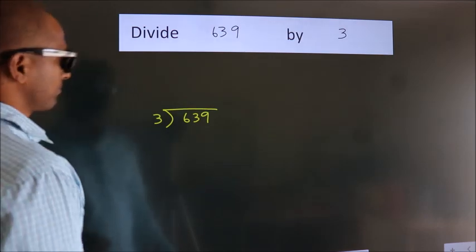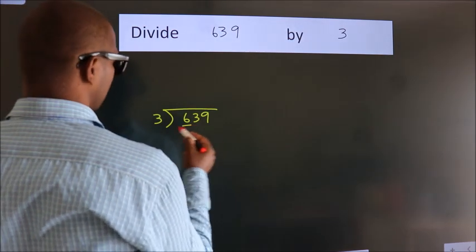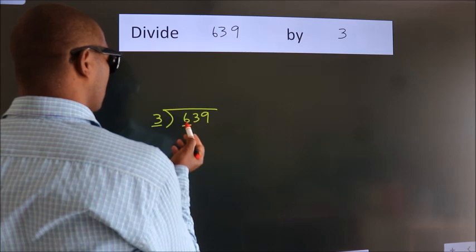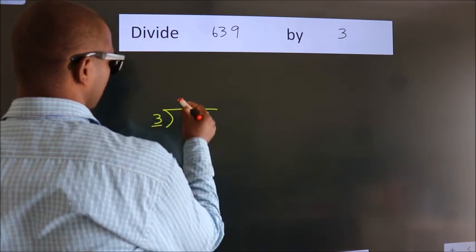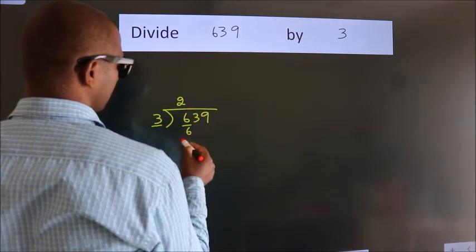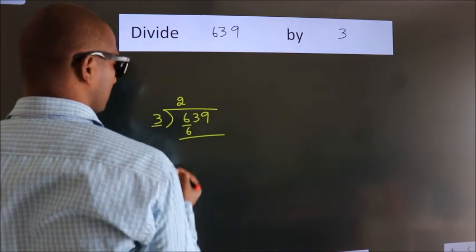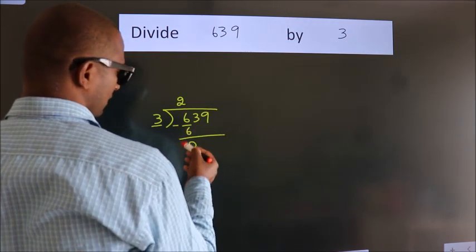Next, here we have 6, here 3. When do we get 6? In 3 table. 3 2's, 6. Now, we should subtract. We get 0.